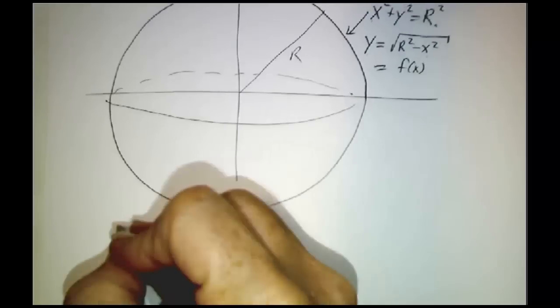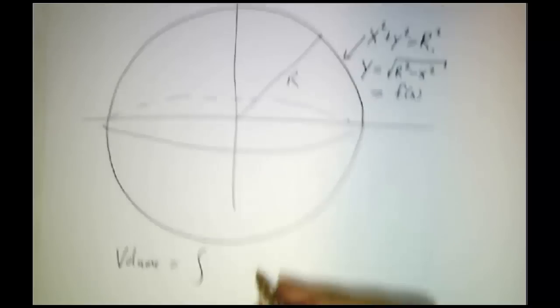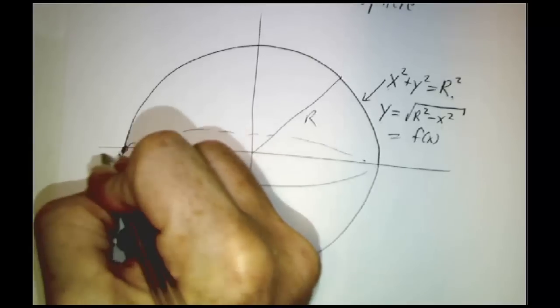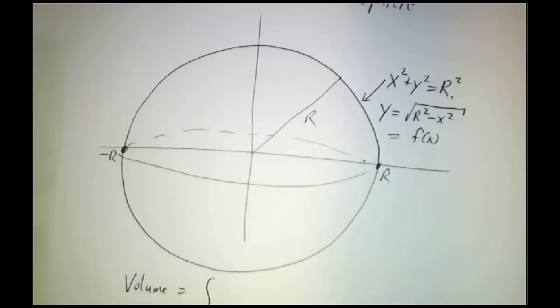So our volume is the integral, let's see, this x goes from minus r to r of pi times the square root of r squared minus x squared all squared dx.